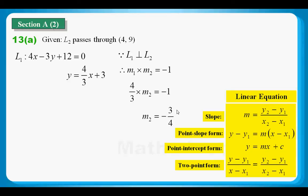So, first of all, we need to find the slope, and then with the given point, we can use point-slope form to form the equation of L2. We found the slope, and this is easy because what we are doing is just simple substitution. This is the end of question 13a.